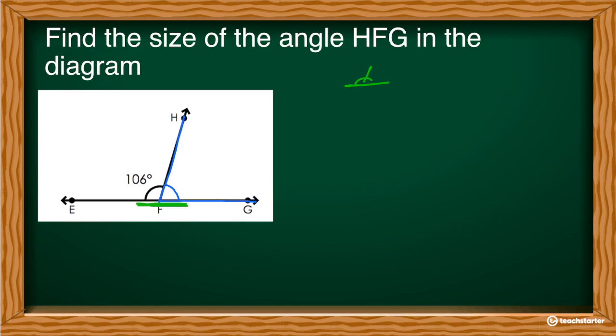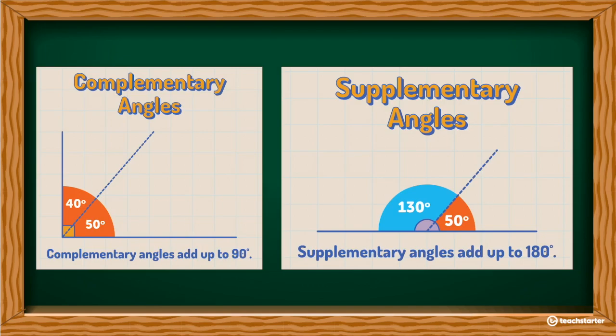How much am I starting with? Well, it's a straight line. So that's 180 degrees. How much have I used up? Well, that is 106. So I have 74 left. So the angle H, F, G equals 74 degrees. That simple.